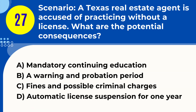Question 27. Scenario: A Texas real estate agent is accused of practicing without a license. What are the potential consequences? A. Mandatory continuing education. B. A warning and probation period. C. Fines and possible criminal charges. D. Automatic license suspension for one year. Answer: C. Fines and possible criminal charges. Explanation: Practicing real estate without a license in Texas can lead to serious consequences, including fines and potential criminal charges.